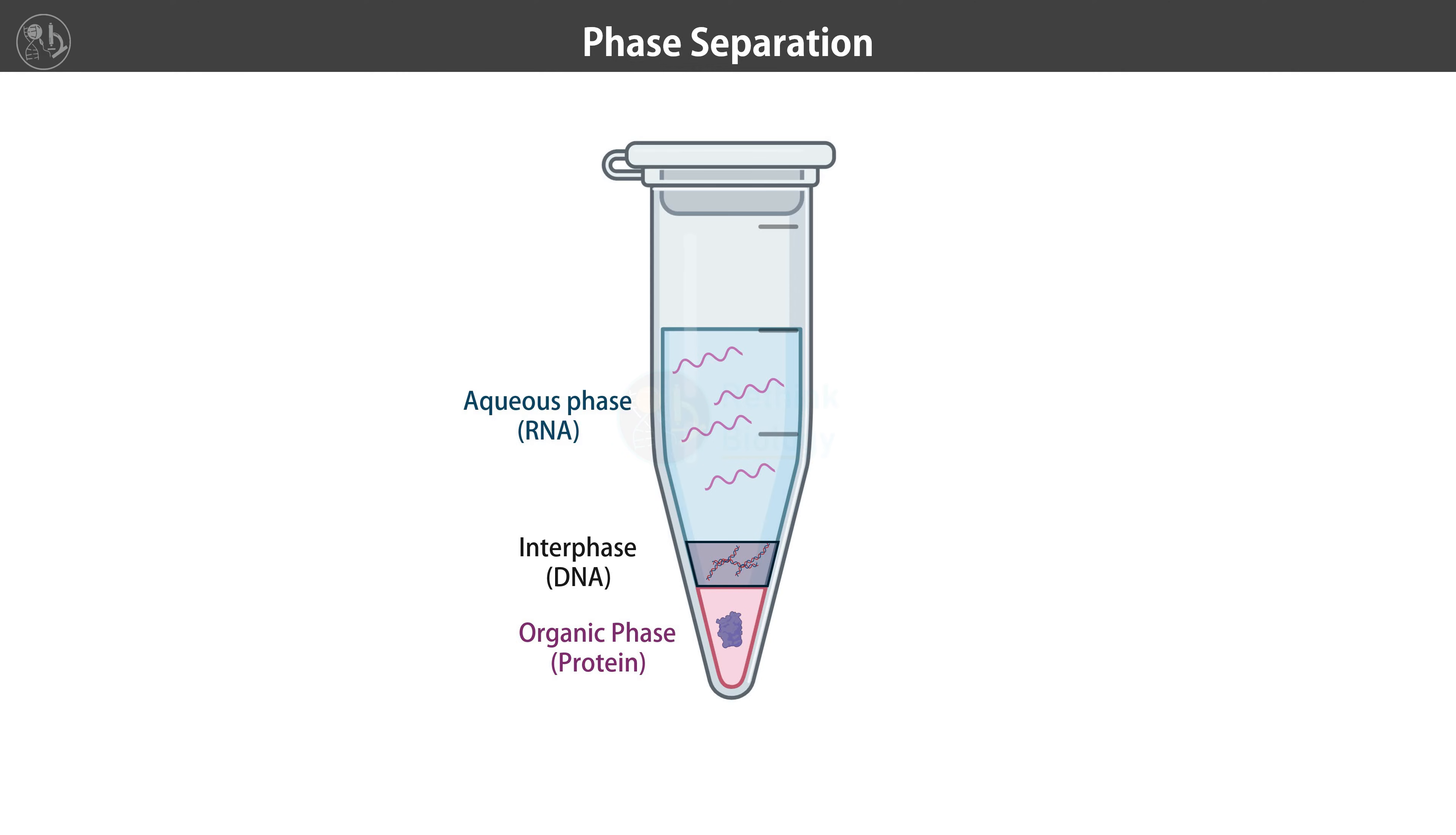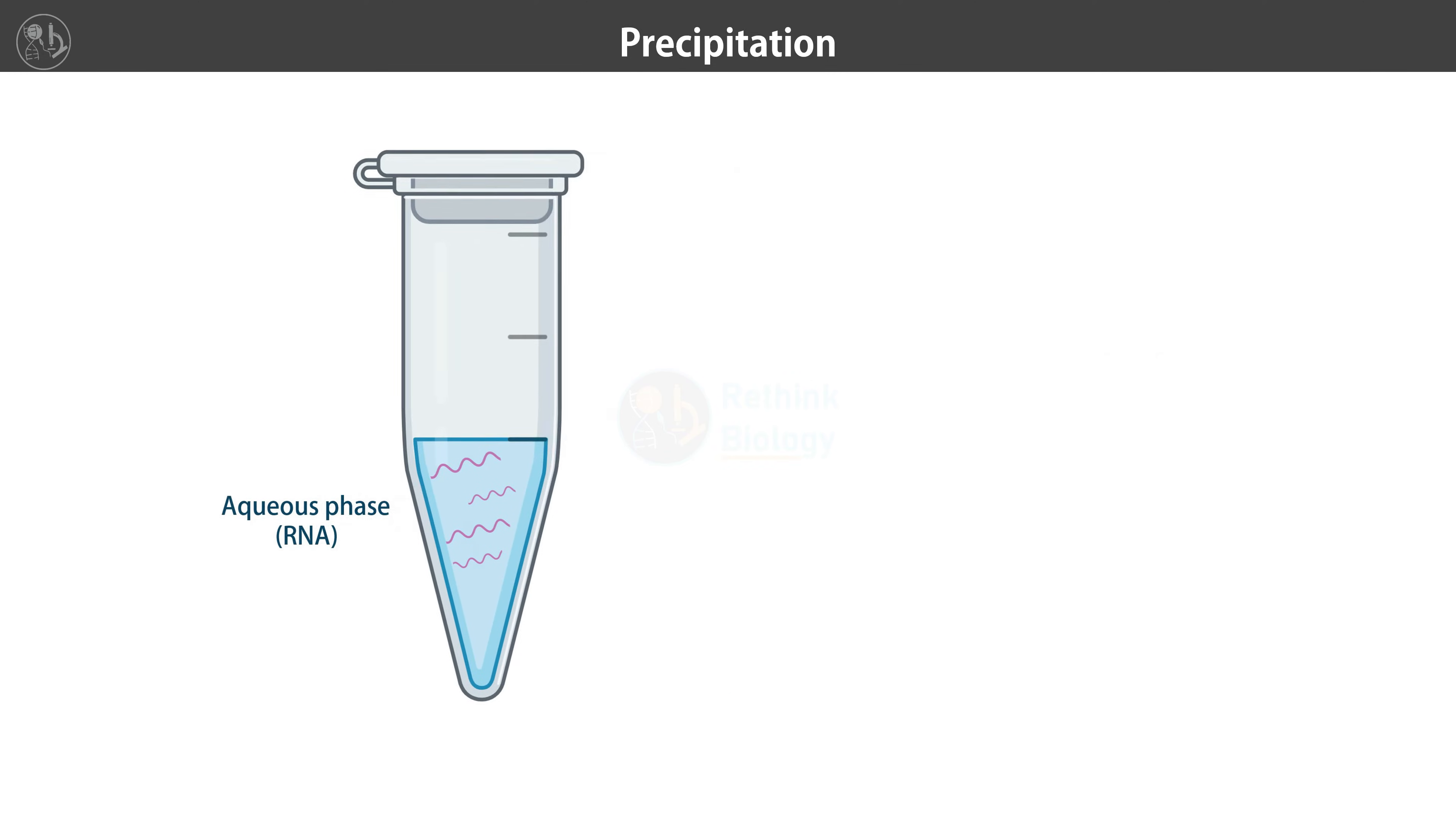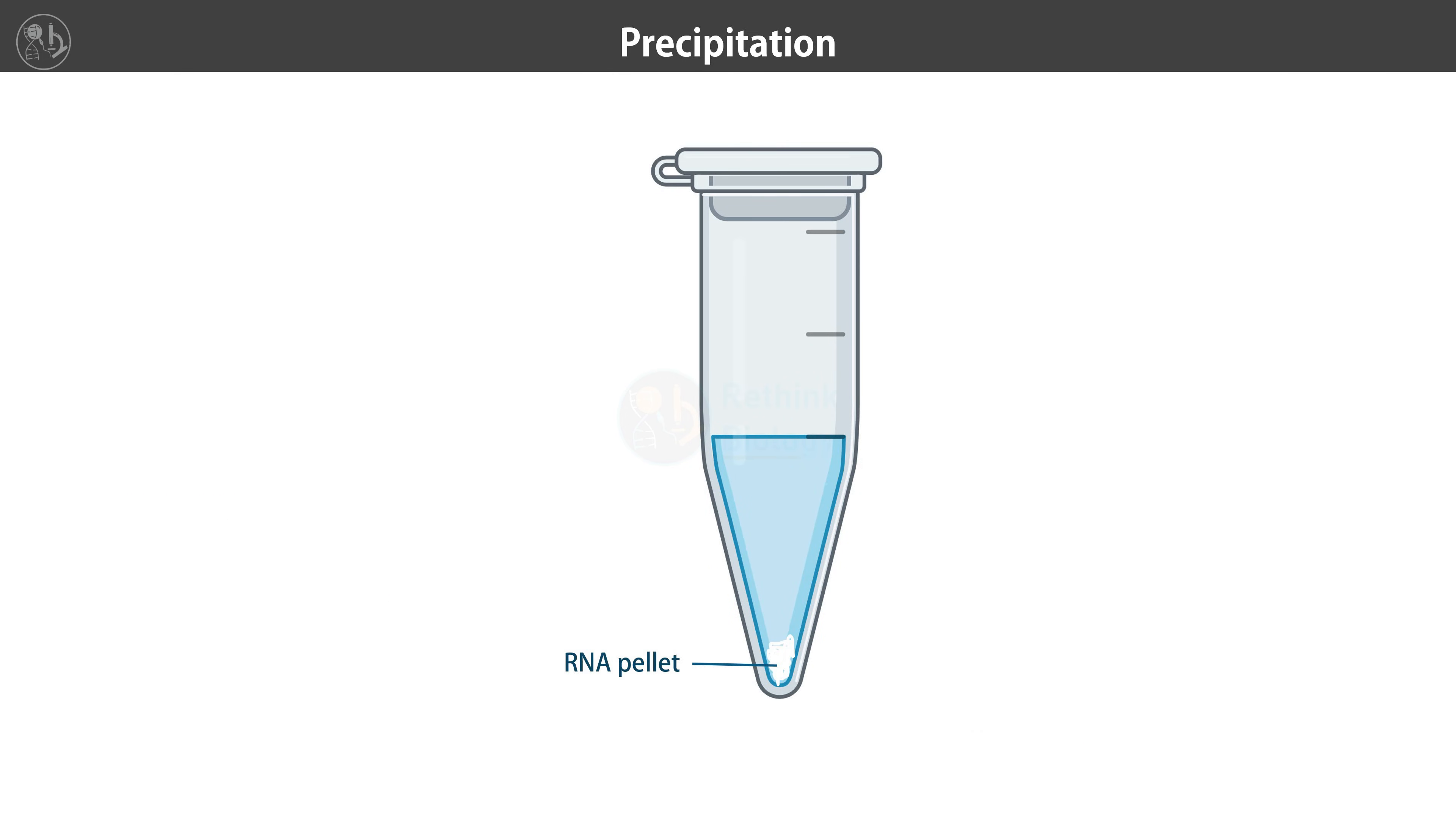Next, the aqueous phase is collected in a fresh tube. RNA is precipitated from the aqueous phase by adding isopropanol. This causes the RNA to form a pellet upon centrifugation. The RNA pellet is washed with ethanol to remove any remaining impurities such as salts and enzymes.